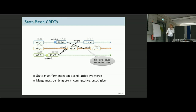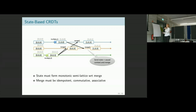There's also something in the middle called delta CRDTs or delta-based CRDTs, where you don't have just a single operation or a full state, but several operations kind of compressed — typically equivalent to a partial state.